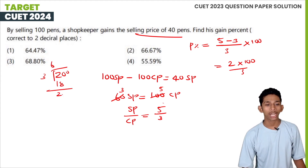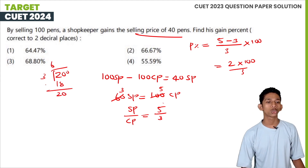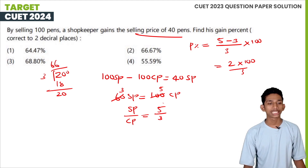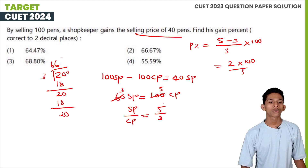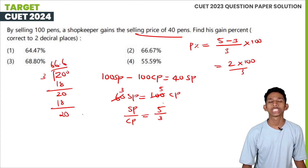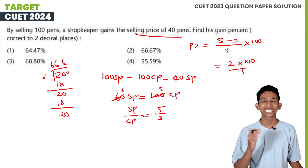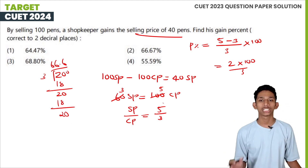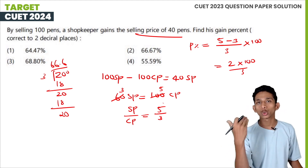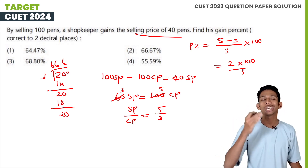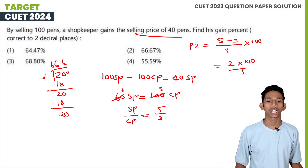200/3 = 66.666... Corrected to 2 decimal places, the gain percentage is 66.67%.